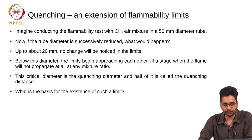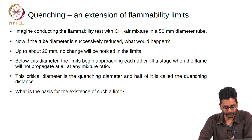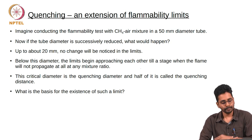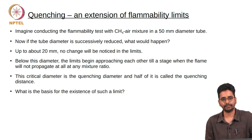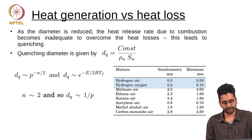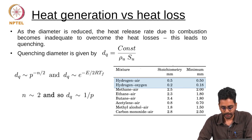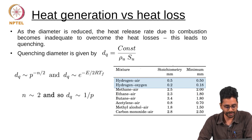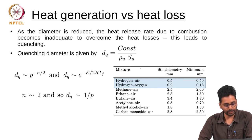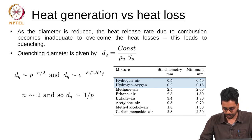This critical diameter at which even a stoichiometric mixture cannot have a propagating flame is known as the quenching diameter, and half of this value is called the quenching distance. As the diameter is reduced, the heat release rate due to combustion becomes inadequate to overcome the heat losses, and this leads to quenching. The quenching diameter is dependent on the flame speed.